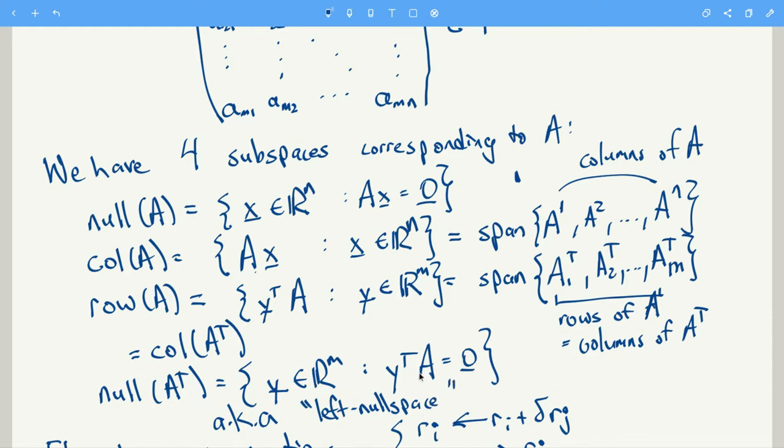And these are the vectors Y such that Y transpose A equals zero. And these vectors come about if you're trying to determine if the rows are linearly independent.